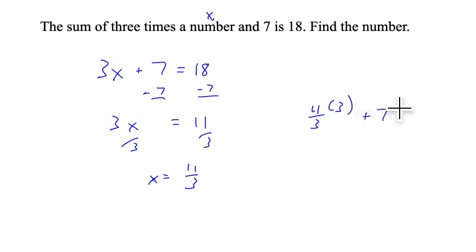If we multiply that by 3 and add 7, we're wondering, do we get 18? Let's see. 3 divided by 3 is just 1, so those cancel out. We have 11 plus 7, that does equal 18. So it looks like the number is 11 thirds. That probably would have been a pretty difficult number to guess in this case. So sometimes a model is a good way to solve a problem.